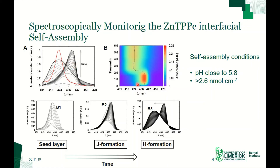If we analyze the maximum of absorbance of the porphyrin, we clearly see that at the beginning the porphyrin shifts towards the blue, and then it shifts towards the red. Based on these results, we divided the process into three steps.